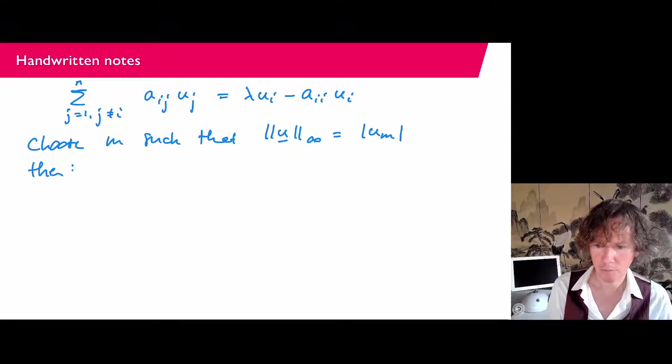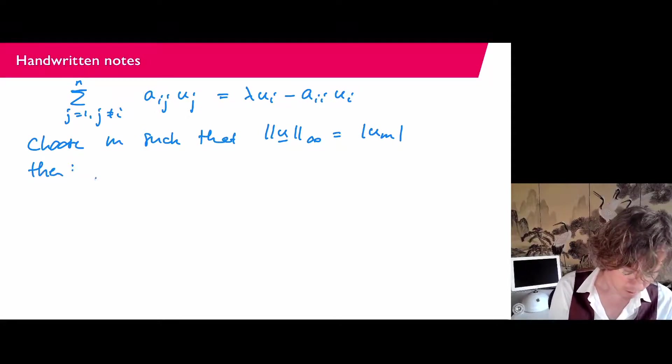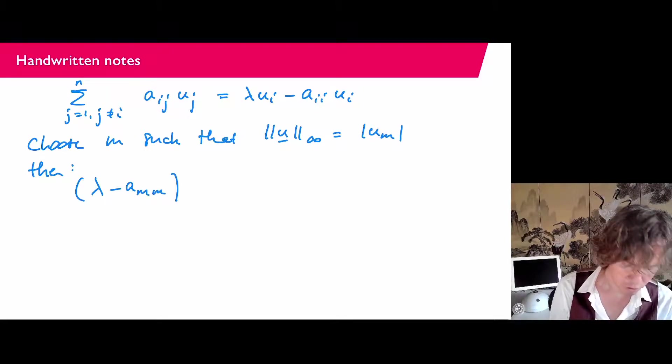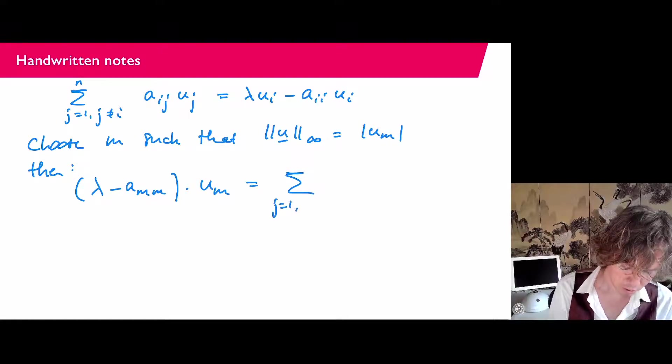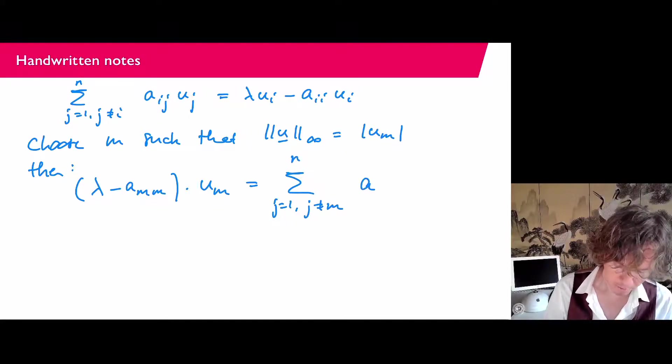And then what we have is that λ minus A_MM times U_M equals the sum j equals 1, j is not equal to M, up to n, A_MJ U_J.